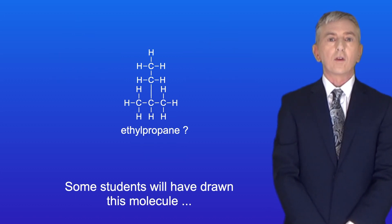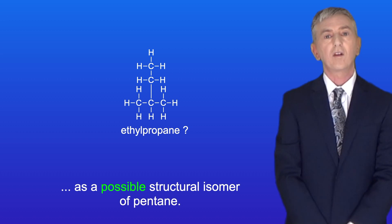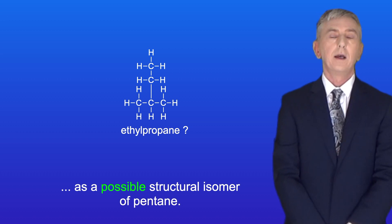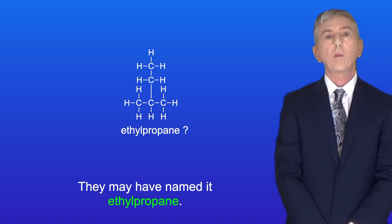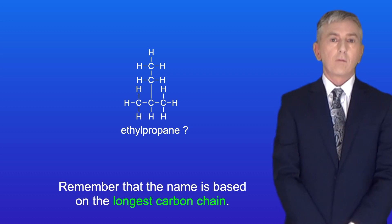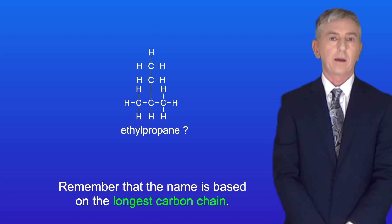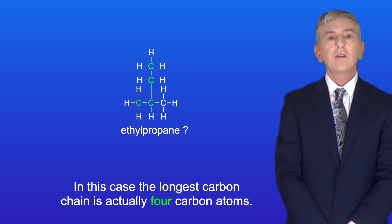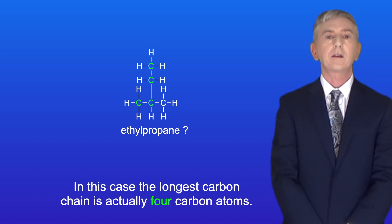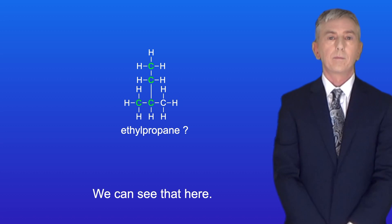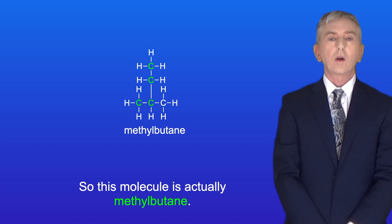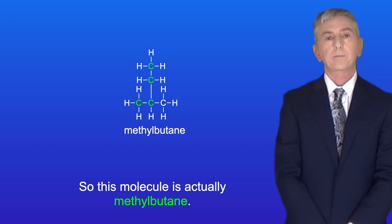Some students may have drawn a molecule called ethylpropane as a possible structural isomer of pentane, but this is incorrect. Remember that the name is based on the longest carbon chain. In this case the longest carbon chain is four carbon atoms, so this molecule is actually methylbutane.